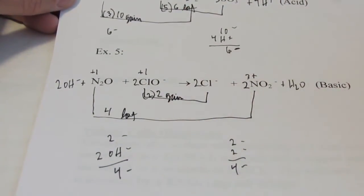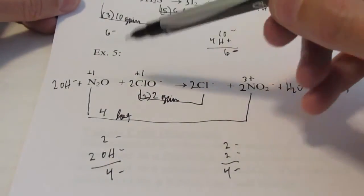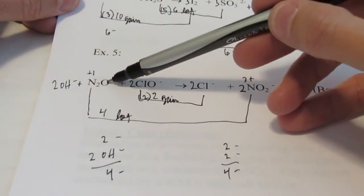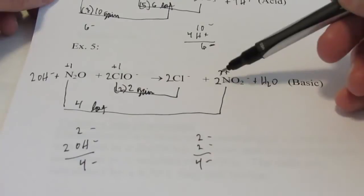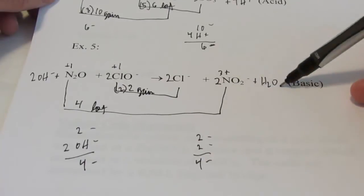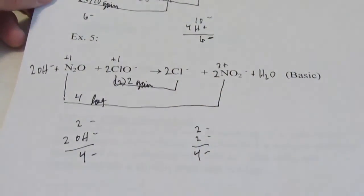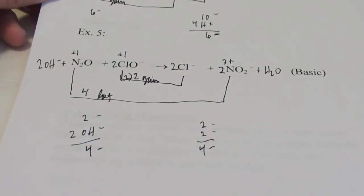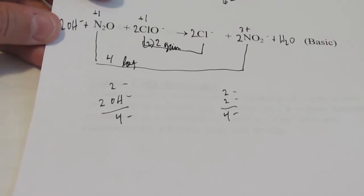Last thing: balance all hydrogens with water. There are two hydrogens in the hydroxides, so I add one water to this side. Let's check oxygens: two oxygens plus one is three, plus two more is five. We have five oxygens on each side — balanced!